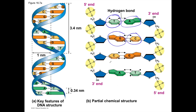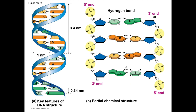A trick to remember purines and pyrimidines: you probably like pie. But before you can have the pie, you've got to cut the pie — C, U, T — cut the pie. Pyrimidines starts with P-Y, and the bases C, U, and T are pyrimidines. The bases A and G are the purines, spelled P-U-R — another trick is 'pure as gold.' So purines are A and G.